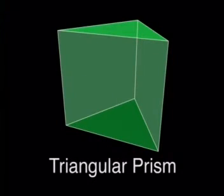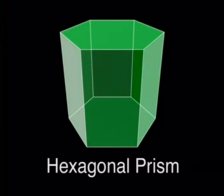Right prisms are prisms whose lateral faces are rectangles and the lateral faces are also perpendicular to the bases. All of the prisms we have shown you so far are right prisms. Look at them again. Their lateral faces are rectangles and they are perpendicular to the bases.